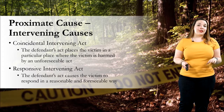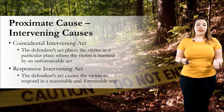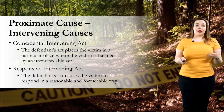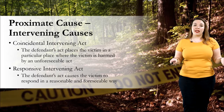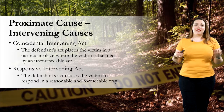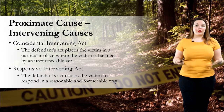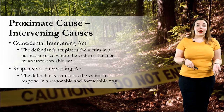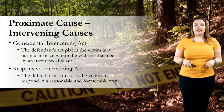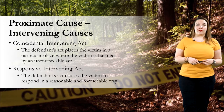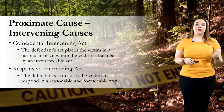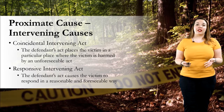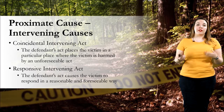On the other hand, responsive intervening acts are those that are foreseeable. For example, if I crash my boat and it starts to sink, it would be reasonable that you would try to swim to shore to save yourself. But if you aren't a good swimmer and the current is very strong and you end up drowning as a result, I would be responsible for your death. With responsive intervening acts, the defendant is legally responsible because his or her action caused the victim to respond accordingly.